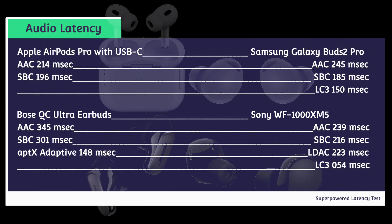What can we tell from the test results? AAC at 214ms or SBC at 196ms from AirPods Pro with USB-C are decent numbers but cannot match other low-latency codecs — pick them only if you must use AAC or SBC, such as with an iPhone. AAC at 345ms or SBC at 301ms from QC Ultra Earbuds are quite bad, but aptX Adaptive at 148ms is much lower. Galaxy Buds 2 Pro AAC at 245ms or SBC at 185ms are decent, and LC3 at 150ms is good — a better choice for Galaxy or Pixel phone users since neither supports aptX Adaptive. Finally, WF-1000XM5 LC3 at 54ms is one of the lowest latency solutions ever for Bluetooth audio. Try them if you have LE Audio devices. That's all for this video — hope you get the idea on how LE Audio reduces audio latency. Thank you for watching.